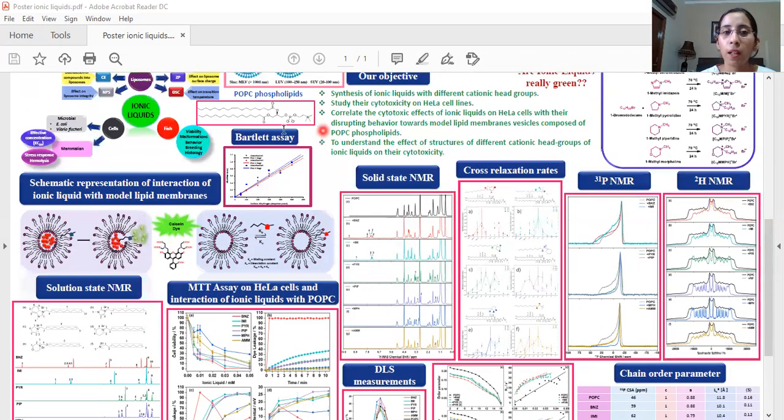31P NMR was performed so as to see the effect of these ionic liquids on the head group of these vesicles and the 2H NMR where the deuterated chains of these lipids were used to see whether the order of these chains was affected by the addition of the ionic liquids.